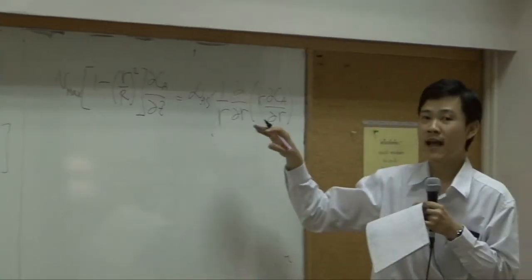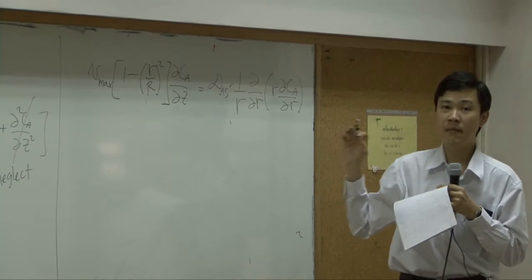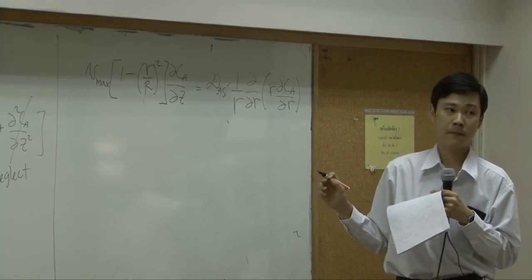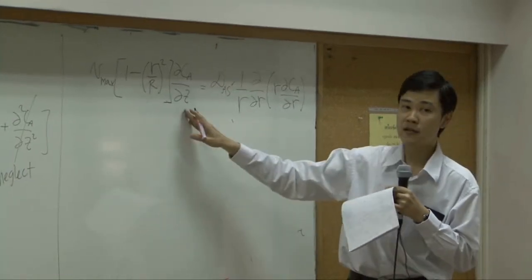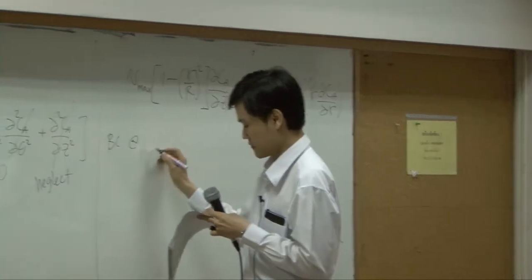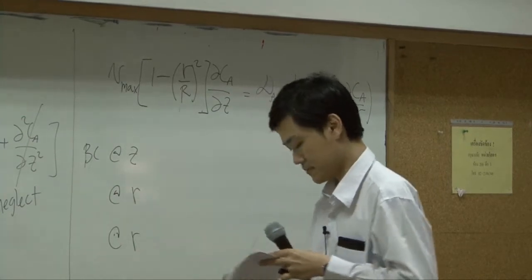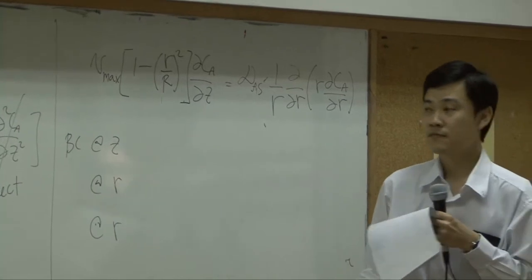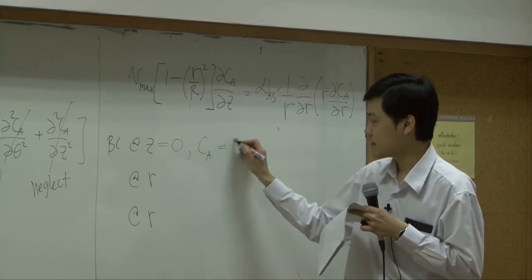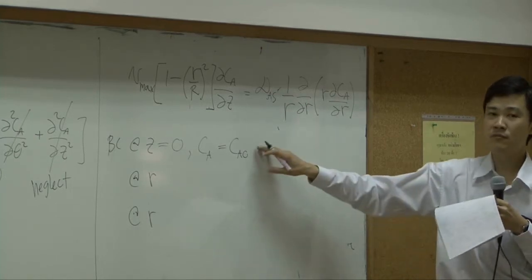From here I'm not asking you to solve this anymore - it's too much. But I'm going to ask you about the boundary conditions. How many boundary conditions do we need? Three. One with respect to Z, two with respect to R. For Z, what do you have? We know as Z equals zero, concentration of A is supposed to be equal to concentration of dilute solution supply. This one is supposed to be a known number.